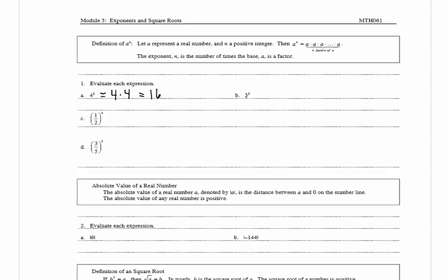In b we have 3 cubed. We could write that as 3 times 3 times 3. The base is 3 and it has three factors. This is equal to 3 times 3 equals 9, times 3 equals 27.